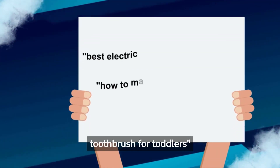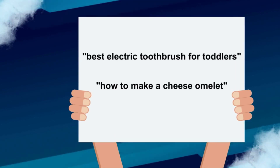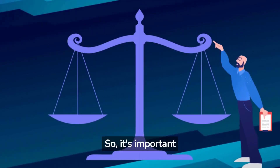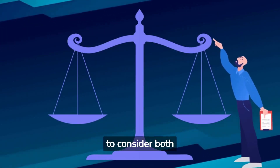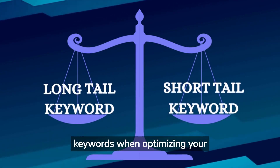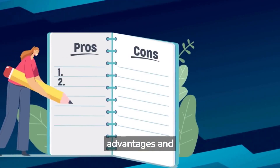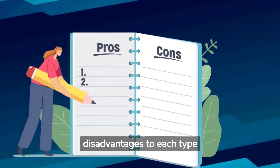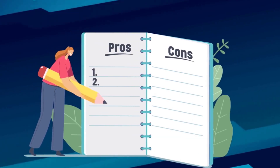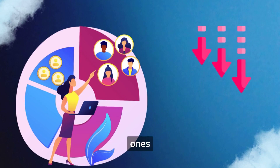Examples of long tail keywords include 'best electric toothbrush for toddlers' or 'how to make a cheese omelet.' It's important to consider both long tail and short tail keywords when optimizing your website for SEO, and there are advantages and disadvantages to each type. Long tail keywords can help you reach a more specific audience, but they have less search volume than short tail ones.